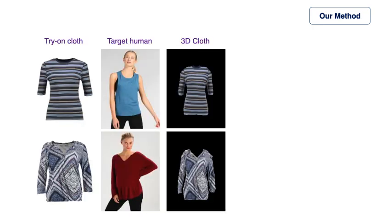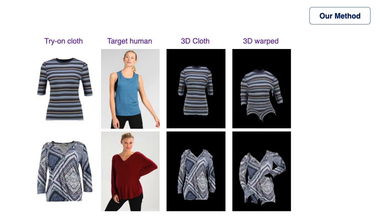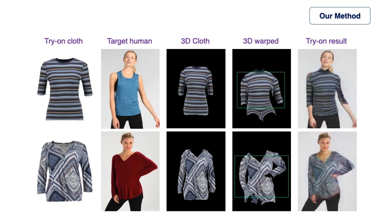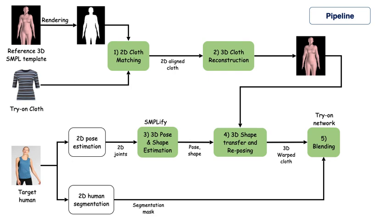We present a hybrid approach for image-based virtual try-on, leveraging 3D clothing reconstruction and deformation using a 3D statistical body model. This is the full pipeline of our proposed method. We take as input a pair of a try-on cloth and a target human image to generate the final try-on result. We match and align the try-on cloth against the SMPL silhouette and reconstruct it in 3D.